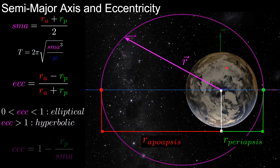We can rearrange that equation to get a form that applies to all orbits. For parabolic and hyperbolic orbits, the semi-major axis is defined as negative. However, we're going to focus on elliptical orbits here and go over the other types of orbits later in the series.